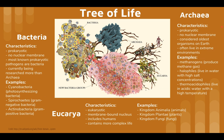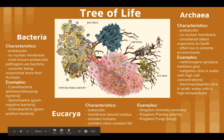The second domain is archaea. Their characteristics are that they are prokaryotic, have no nuclear membrane, are considered to be the oldest organism on Earth, and often live in extreme environments. Examples include methanogens, which produce methane gas; halophiles, which live in water with high salt concentrations; and thermoacetophiles, which live in acidic water with a very high temperature.